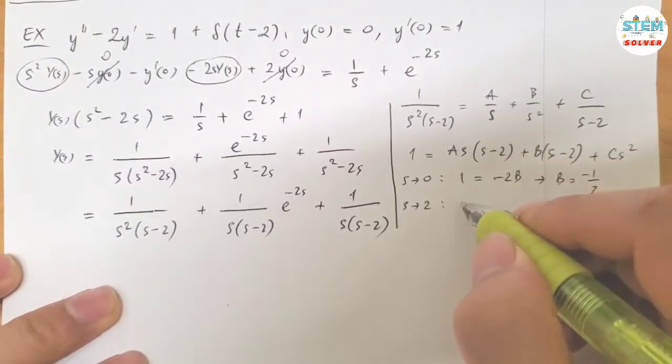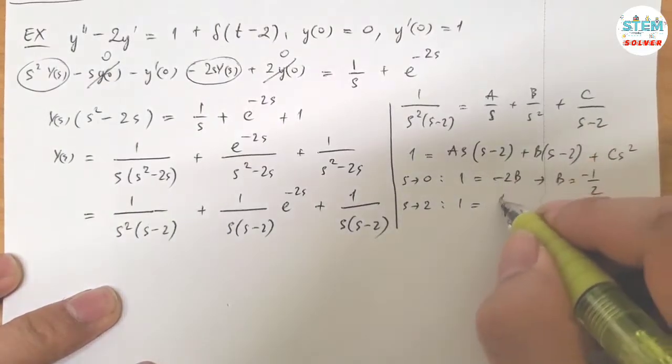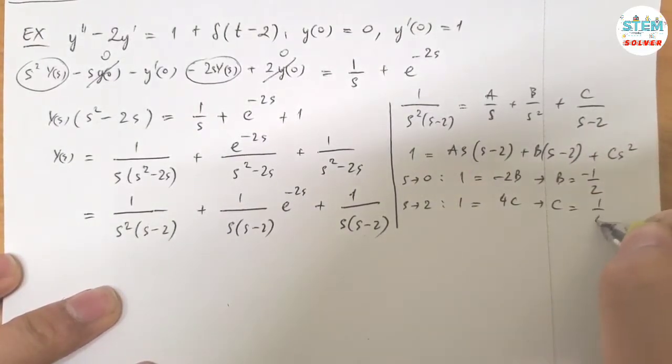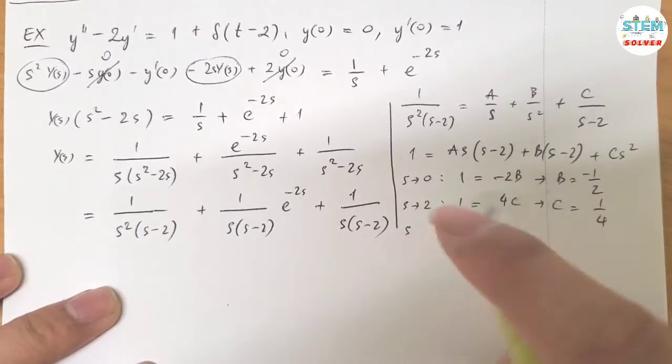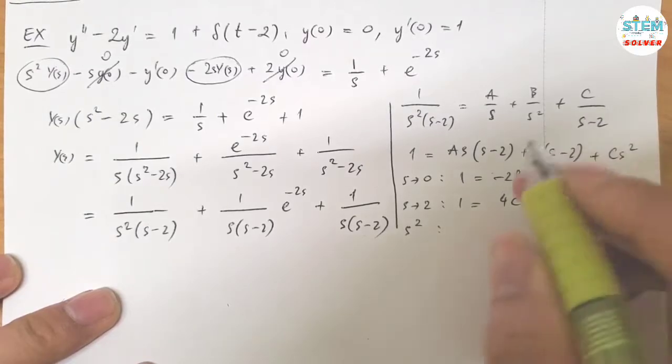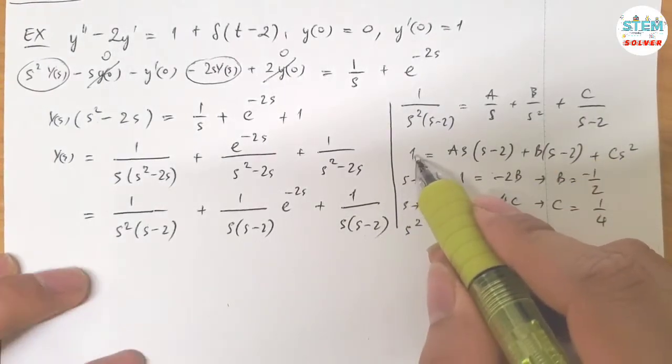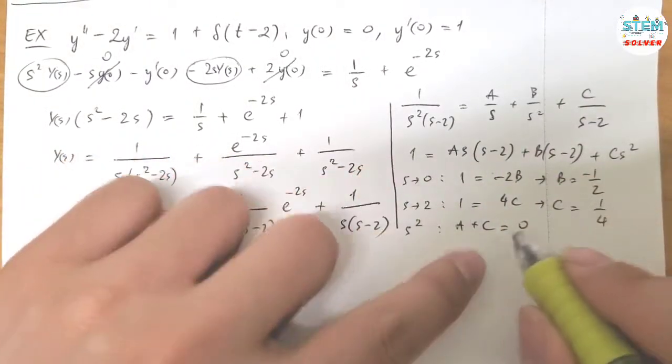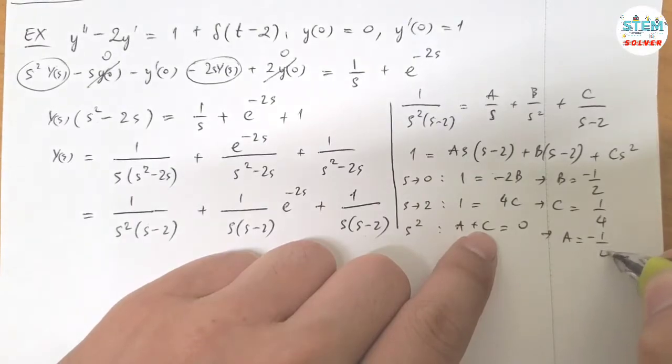Let S equal 2, I have 1 equals, it eliminates this and this, so 4C. So C equals 1 fourth. Now let's take a look at the leading coefficient of S squared. So we have A plus C equals 0 because we have nothing on the left. We know C, which is 1 fourth, so A has to be negative 1 fourth.